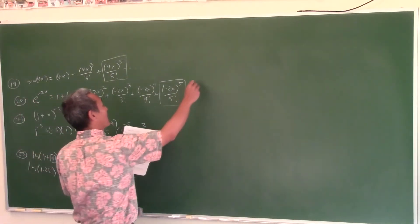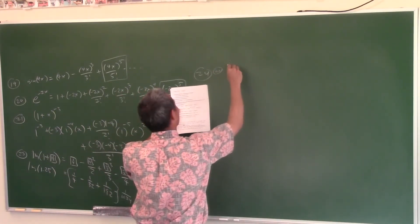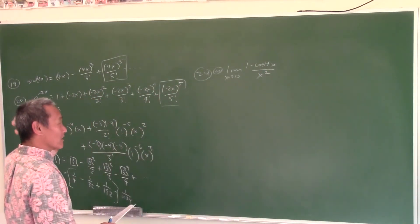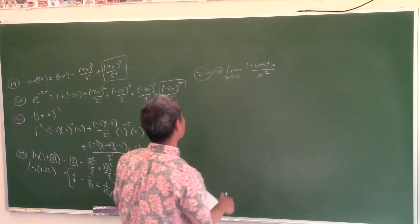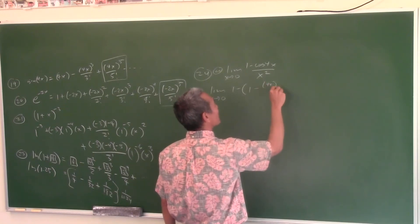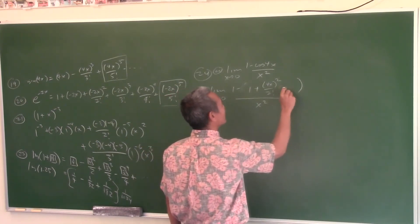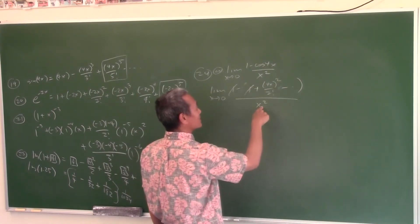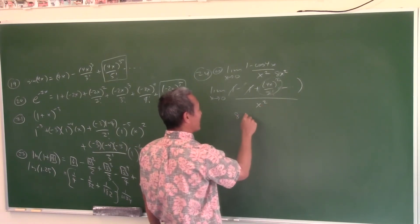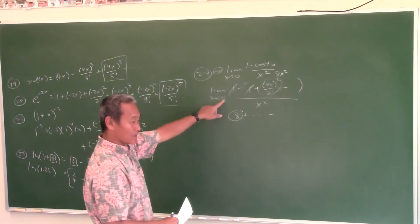Limit as x approaches 0 of (1 minus cos(4x)) over x². Plugging in 0 gives 0/0, so use power series. The power series for cosine is 1 minus x²/2! plus … so cos(4x) = 1 minus (4x)²/2! plus … Substituting: the 1s cancel after distributing the minus sign. The leading term becomes (16x²/2)/x² = 16/2 = 8. Everything else has x in it and goes to 0, so the limit is 8.